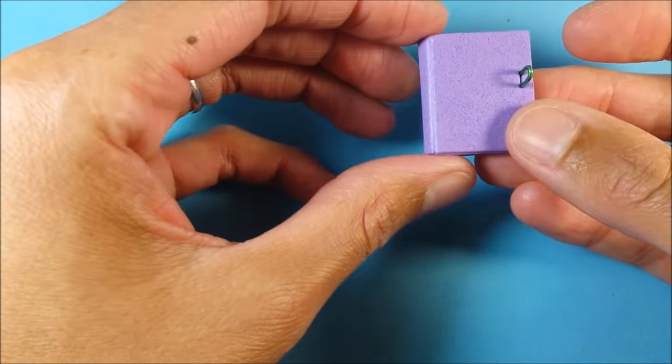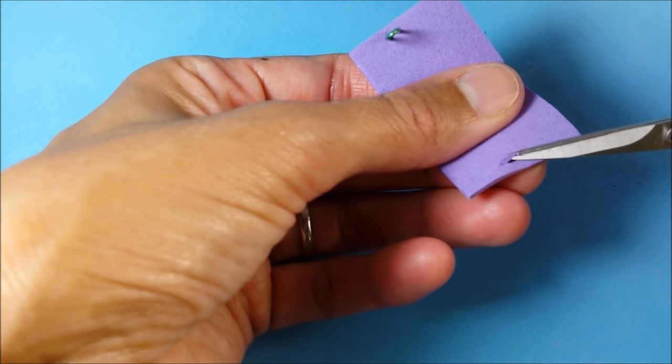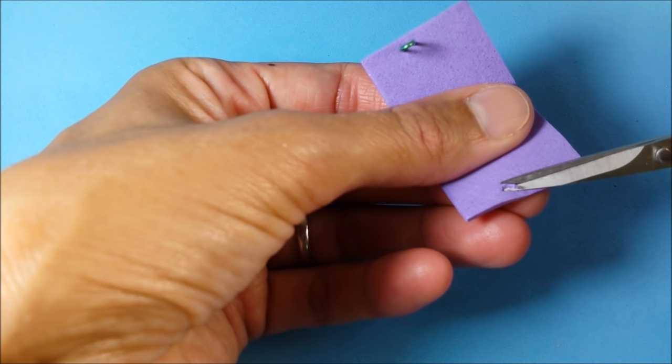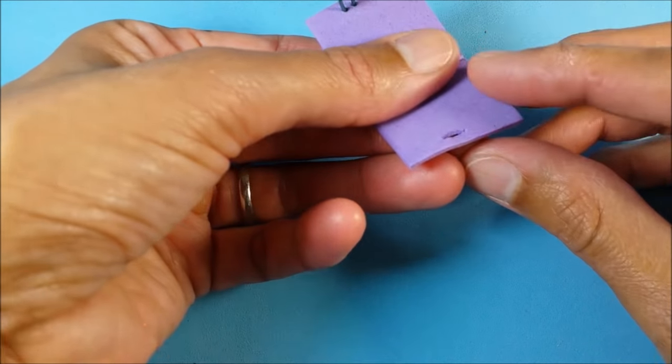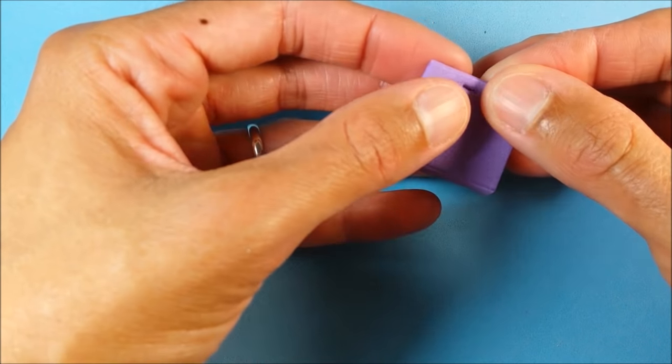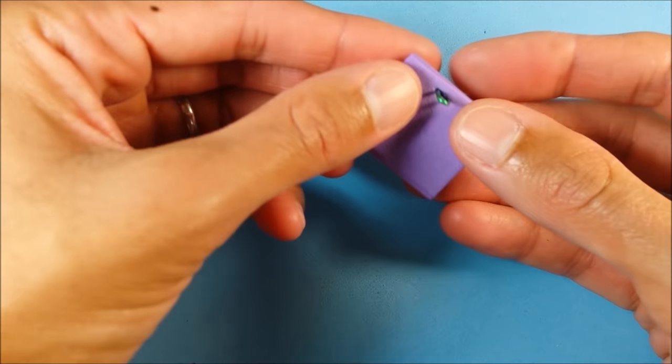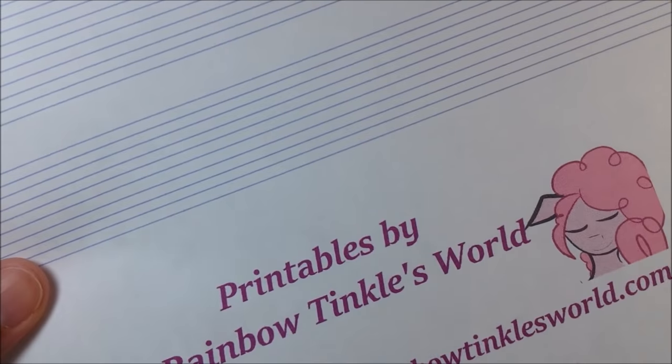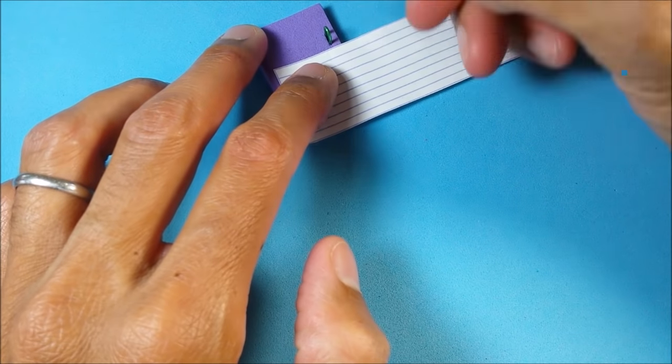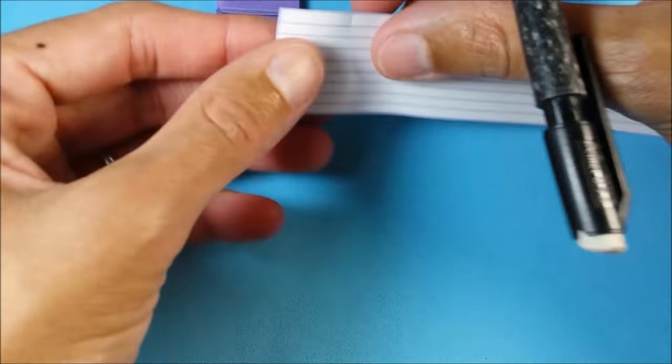Then I cut out my lined paper. The printable will be in the description section. I mark on my diary so that my paper is not too wide.